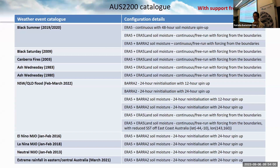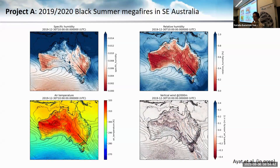With significant improvements in computational performance and efficiency, it really opens up a lot of opportunities for the community. In the past several months, we've been able to complete a series of simulations with a wide range of configurations focused on a number of significant high-impact weather events as shown in this table. The length of the simulations varies from several days to several weeks to several months, depending on the nature of the events.